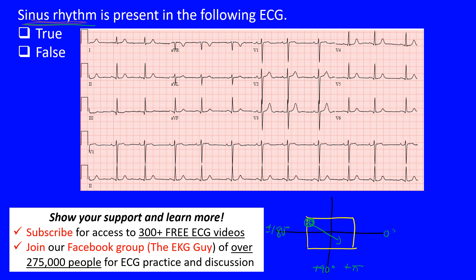In the quadrant system: positive 90 degrees is down here, plus or minus 180 degrees is here, and negative 90 degrees is up here. Lead I sits at 0 degrees, AVF at positive 90 degrees, lead II at positive 60 degrees, lead III is over here, AVR is up here, and in the horizontal plane the precordial leads V4, V5, and V6 are in this region. The atrial depolarization vector is heading toward those leads.